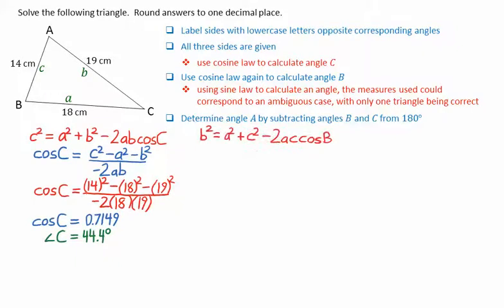We can now do the exact same thing, but this time to figure out angle B. This time we have B squared equals A squared plus C squared minus 2AC cosine angle B. Again, rearranging to express for cosine of B, we get B squared minus A squared minus C squared divided by negative 2AC.